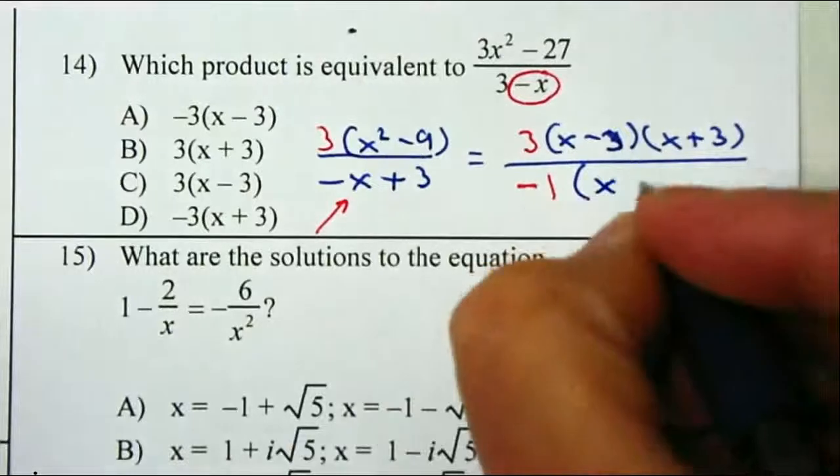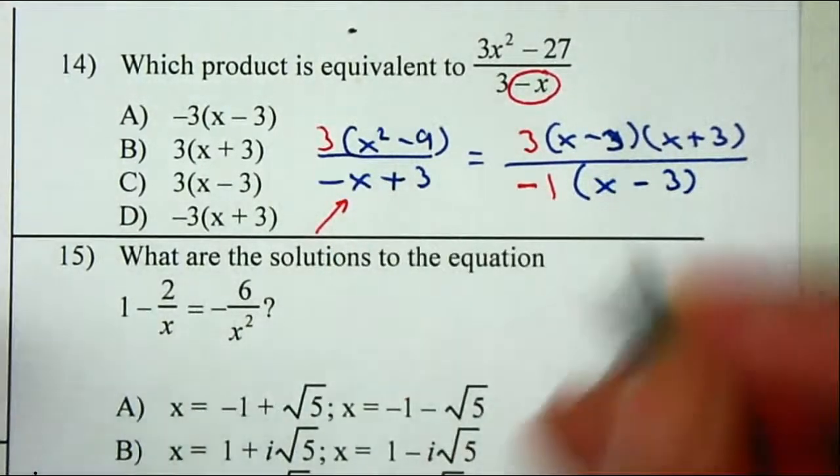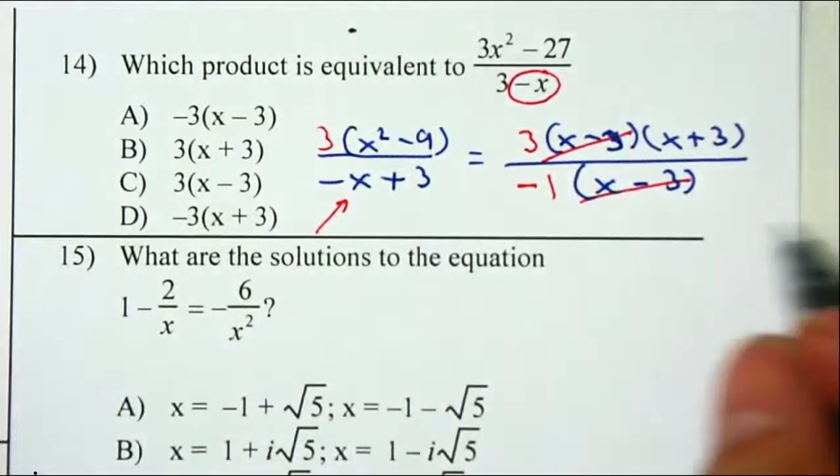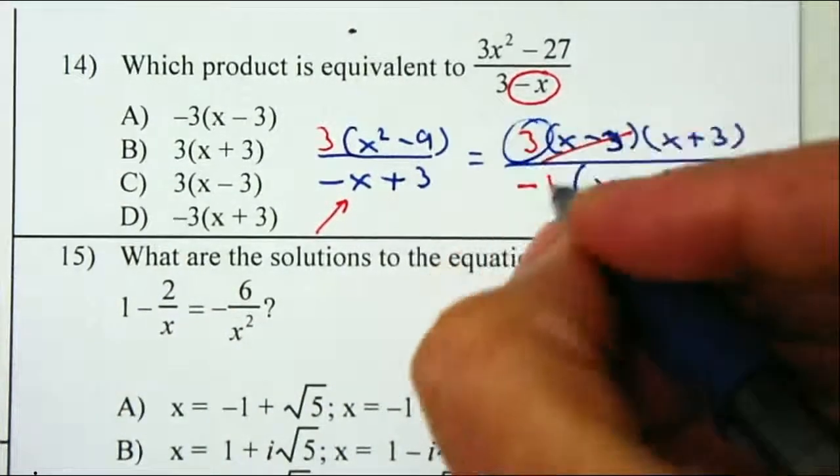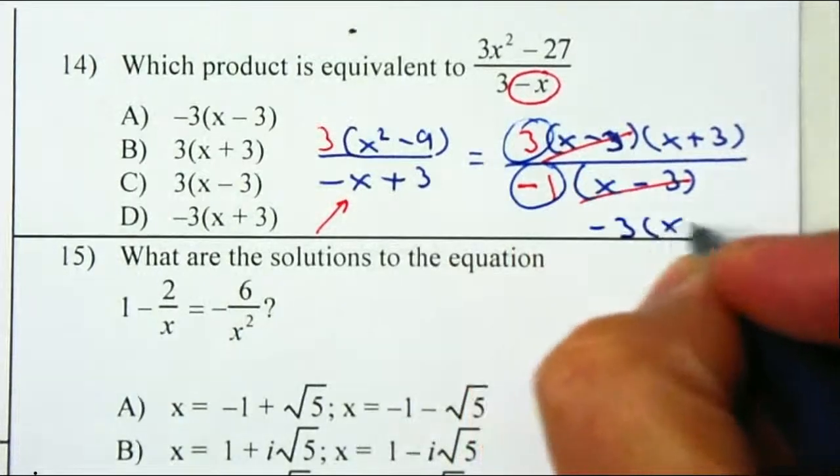So therefore, the x minus 3 cancels out, and what's left behind: 3 divided by negative 1 will give me a negative 3, and we have x plus 3.